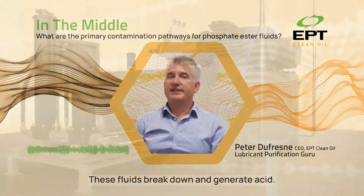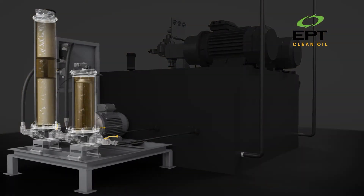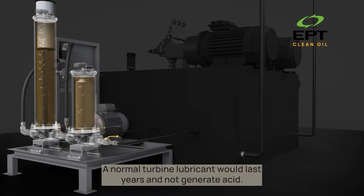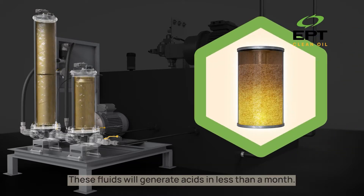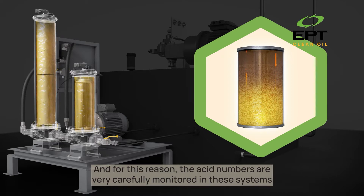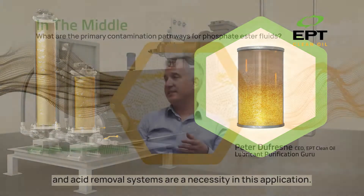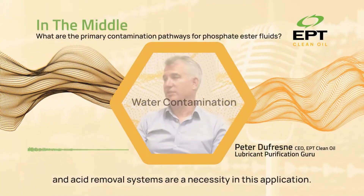These fluids break down and generate acid. A normal turbine lubricant would last years and not generate acid. These fluids will generate acids in less than a month. They are generating sufficient quantities of acid, and for this reason, the acid number is very carefully monitored in these systems, and acid removal systems are a necessity in this application.